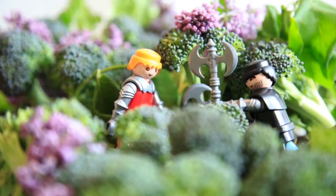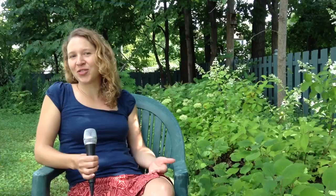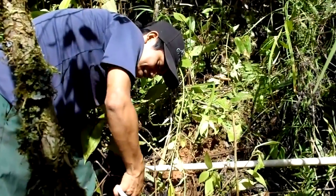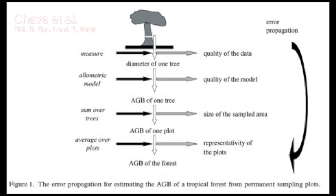To estimate emissions from land cover change, we need to know how much carbon is present in the forest — essentially, we need to weigh the forest. Normally we would have to cut it and weigh it, but since we want to conserve the forest, that's not an option. So we develop equations that relate ground measurements to biomass, and these equations propagate error. There is also error in the measurements themselves, making this one of the major sources of error in estimating emissions from land cover change.